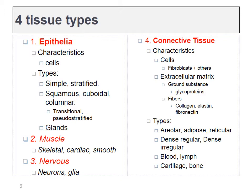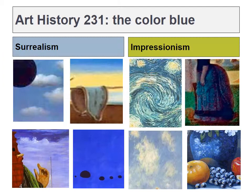Today we're learning about the four main types of tissue: epithelia, muscle, nervous, and connective tissue, and we need to learn some basic elements about each of these.